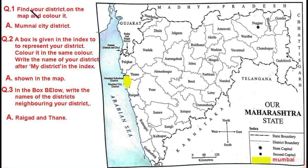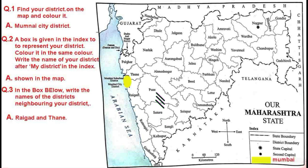Let us see the questions. First, find your district on the map and color it — we stay in Mumbai, so we color our Mumbai district. For question two, a box is given in the index to represent your district — color it the same color and write the name of your district. We used yellow and wrote Mumbai District. If someone stays in Pune, they would color Pune and write Pune.